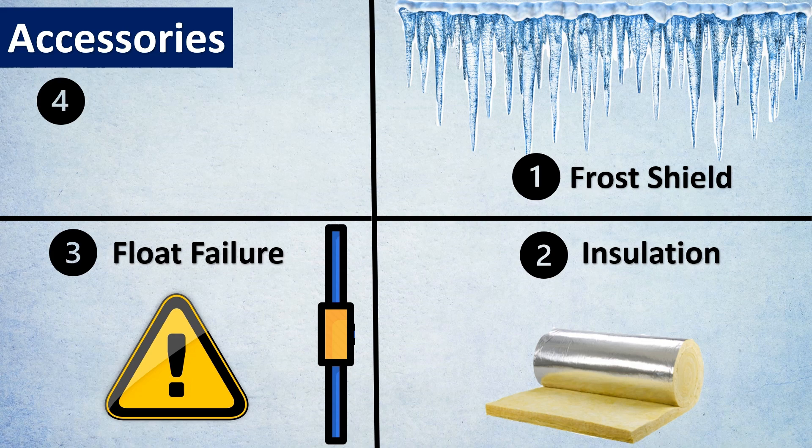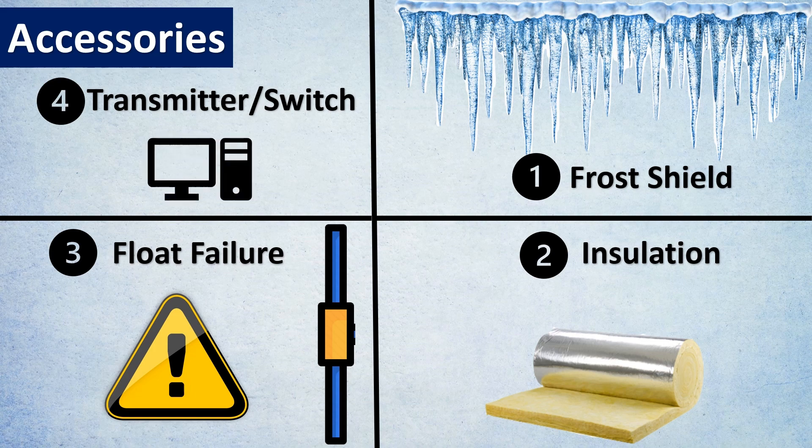Sometimes people want this indication happening in the DCS to show something related to it. For that, a transmitter switch can also be attached to this assembly so that it can show in your control system. But these special requirements have to be shared with the vendor.